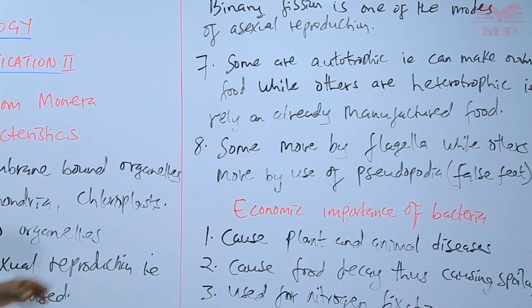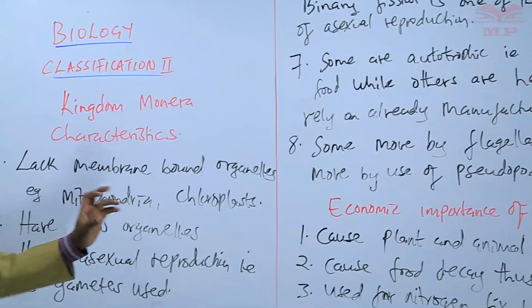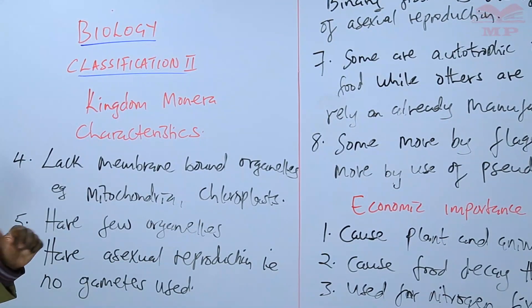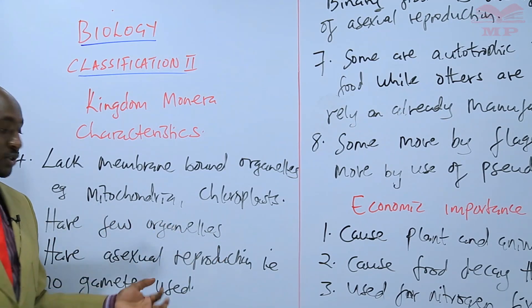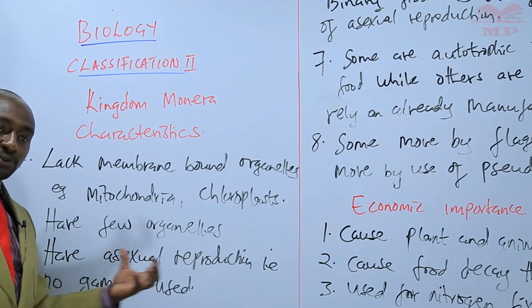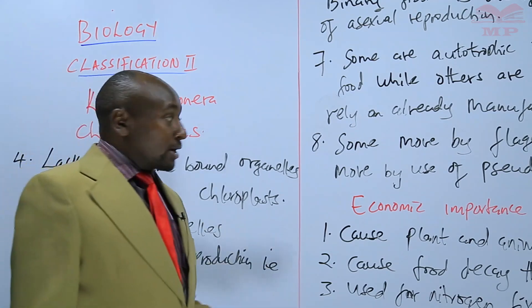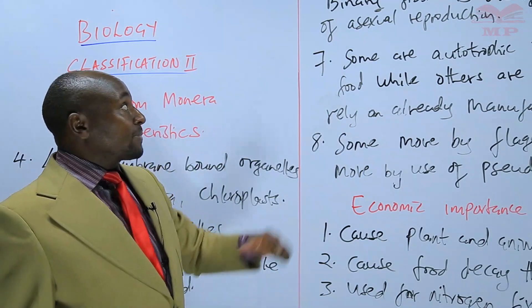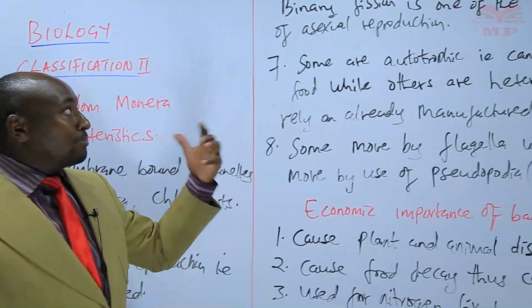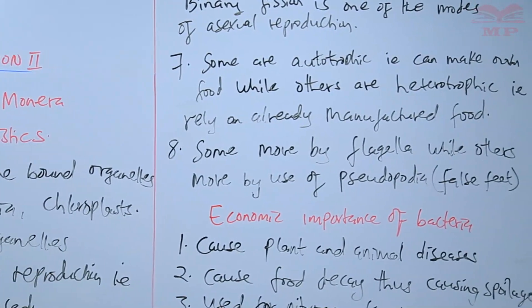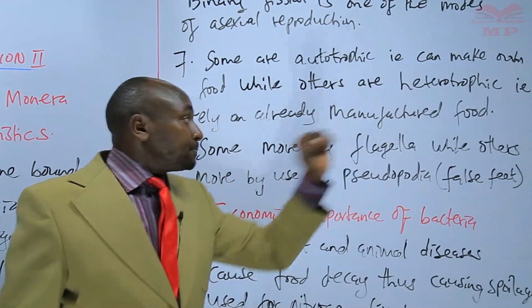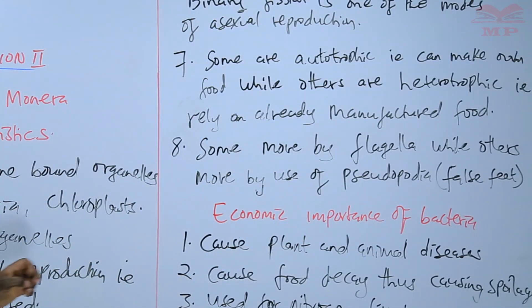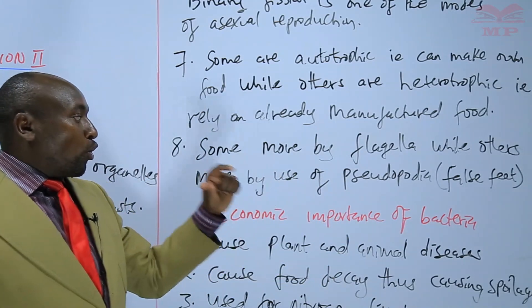So today we have learned the characteristics of Kingdom Monera. We have seen that they lack membrane-bound organelles such as mitochondria and chloroplasts. We have also seen that they have few organelles. Their mode of reproduction is asexual, meaning it does not use gametes. For example, one of the modes of asexual reproduction used by bacteria is called binary fission — we shall look at that in more details in other topics. Their mode of nutrition is either autotrophic or heterotrophic. And finally, they move by flagella or pseudopodia.